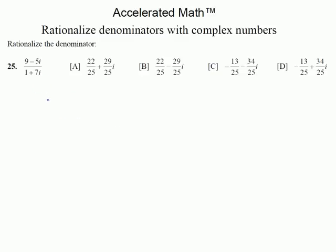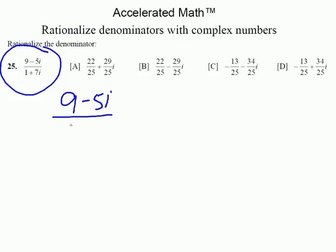Here's the original problem and the multiple choice answers. We're going to go 9 minus 5i over 1 plus 7i. We're going to use the concept of multiplying it by 1, just like you would to get a common denominator — something like 3 over 3. But we're not going to use that. Watch what we're going to do.